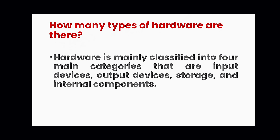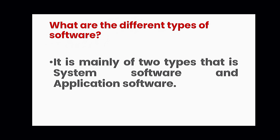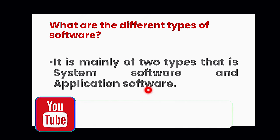How many types of hardware are there? Hardware is mainly classified into four categories: input devices (mouse, keyboard, scanner), output devices (monitor, printer), storage devices (floppy disk, USB), and internal components (those present inside the system unit). Types of software: mainly two — system software, which controls and manages hardware components, and application software, which you install yourself. Application software is further divided into package software and customized software.